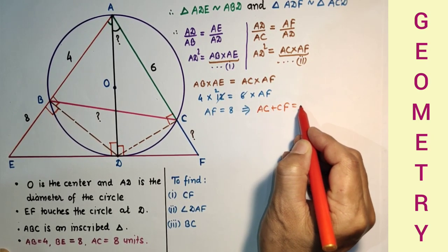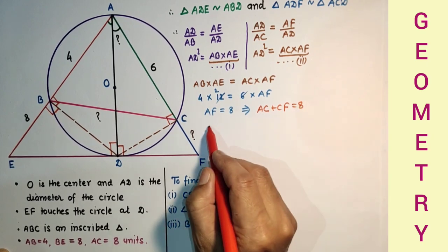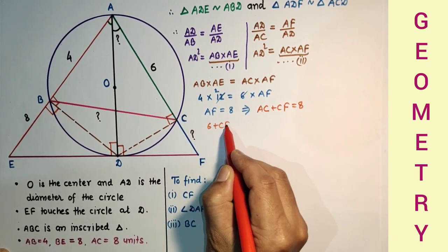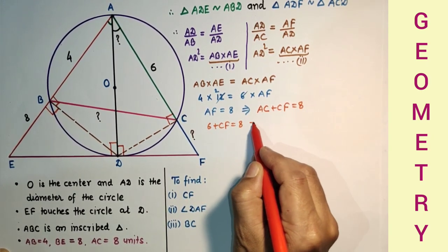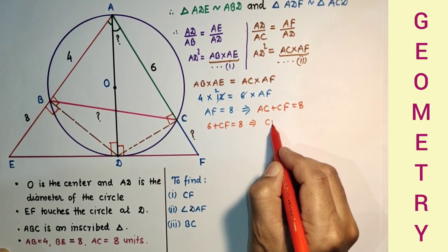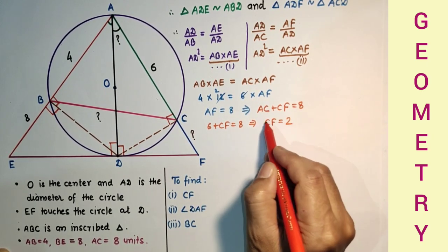But AF is the sum of AC and CF, so AC plus CF is equal to 8. AC is 6, so 6 plus CF equals 8, and that means CF is equal to 2 units, which is required.